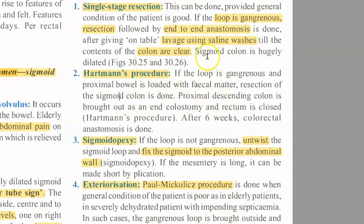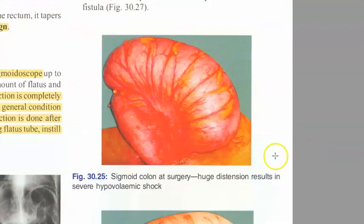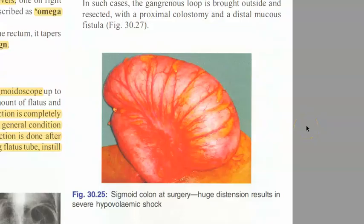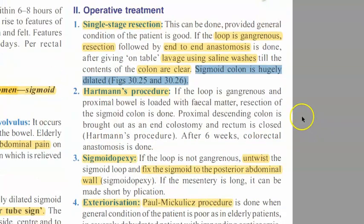The sigmoid colon is hugely dilated at surgery - looking at the surgical images, you can see the enormous distension of the sigmoid colon. If there is gangrene, the gangrenous segment is removed and end-to-end anastomosis is performed. That is single stage resection.